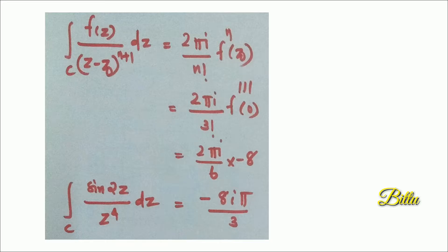Replacing f(z), Z₀, and N on the left side, the integral reduces to the given question and the answer of the integral over C of sin(2z) by z⁴ dz is −8iπ/3.